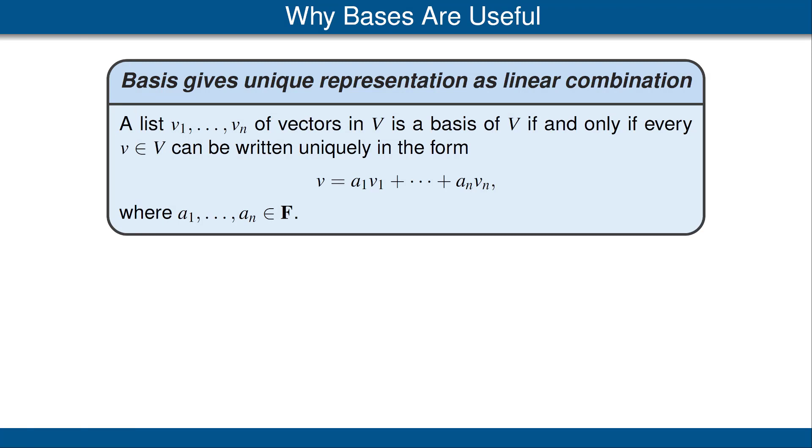The next result shows why bases are so important. Here's the result: A list of vectors in V is a basis if and only if every vector in V can uniquely be written as a linear combination of those vectors.